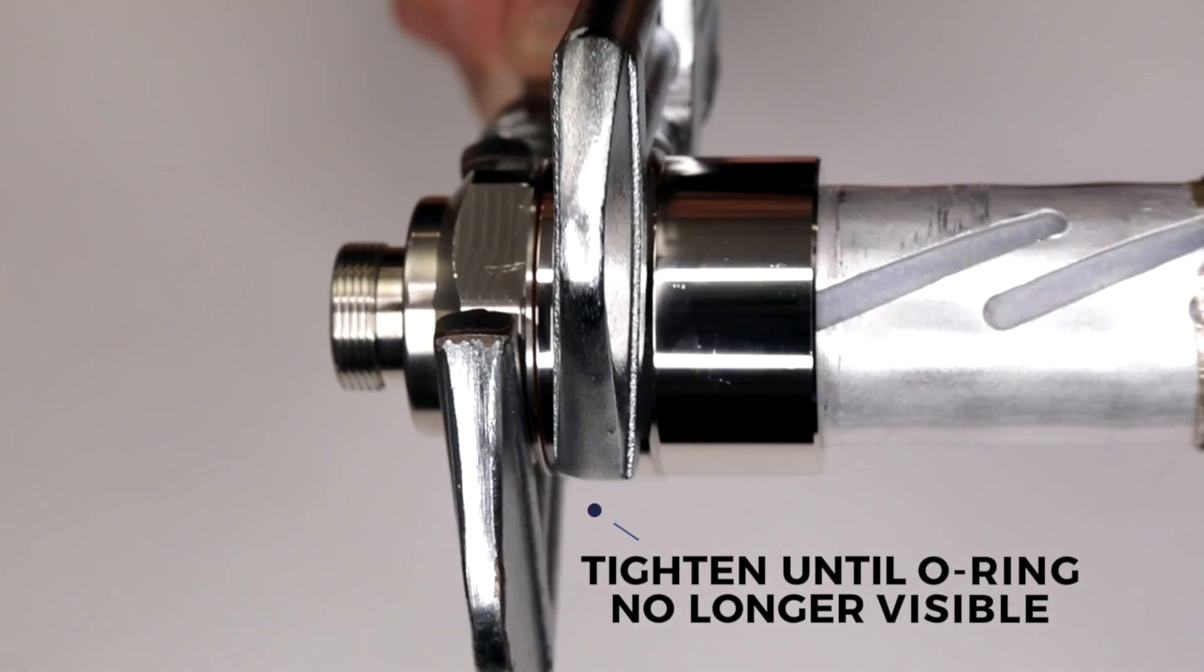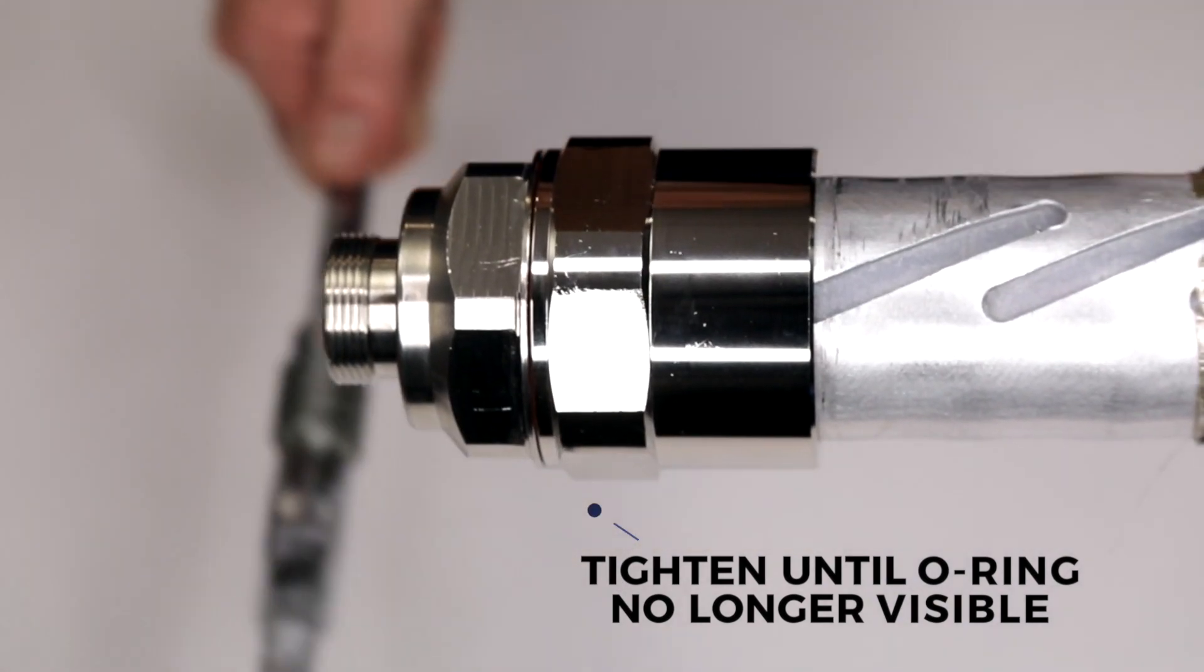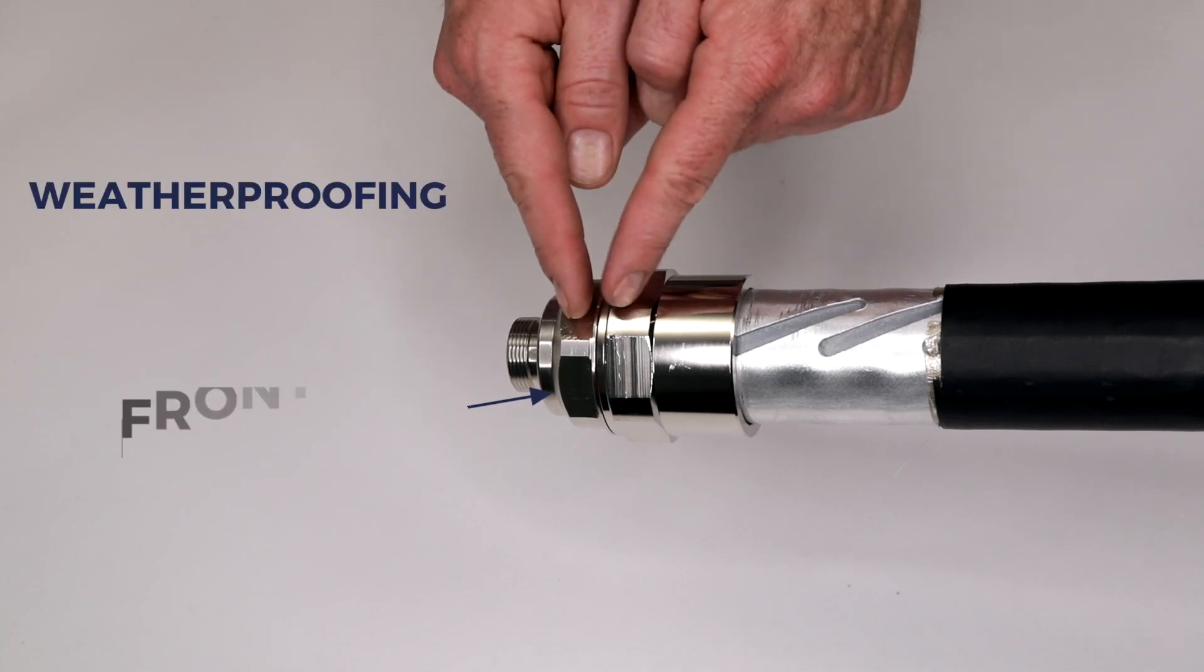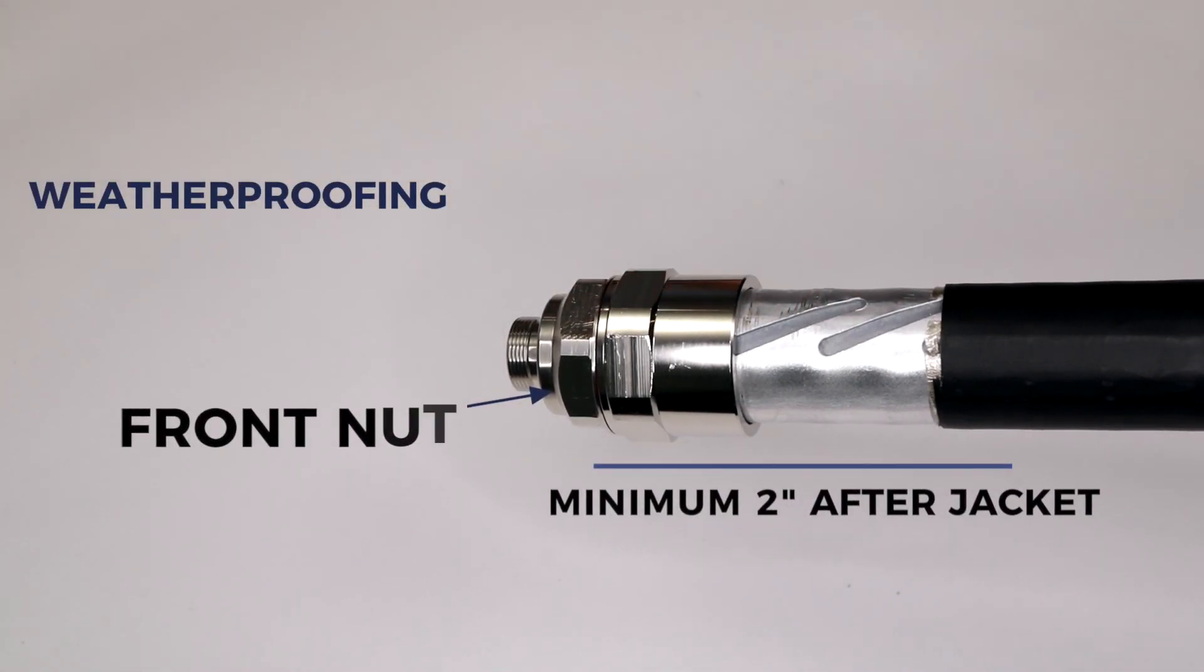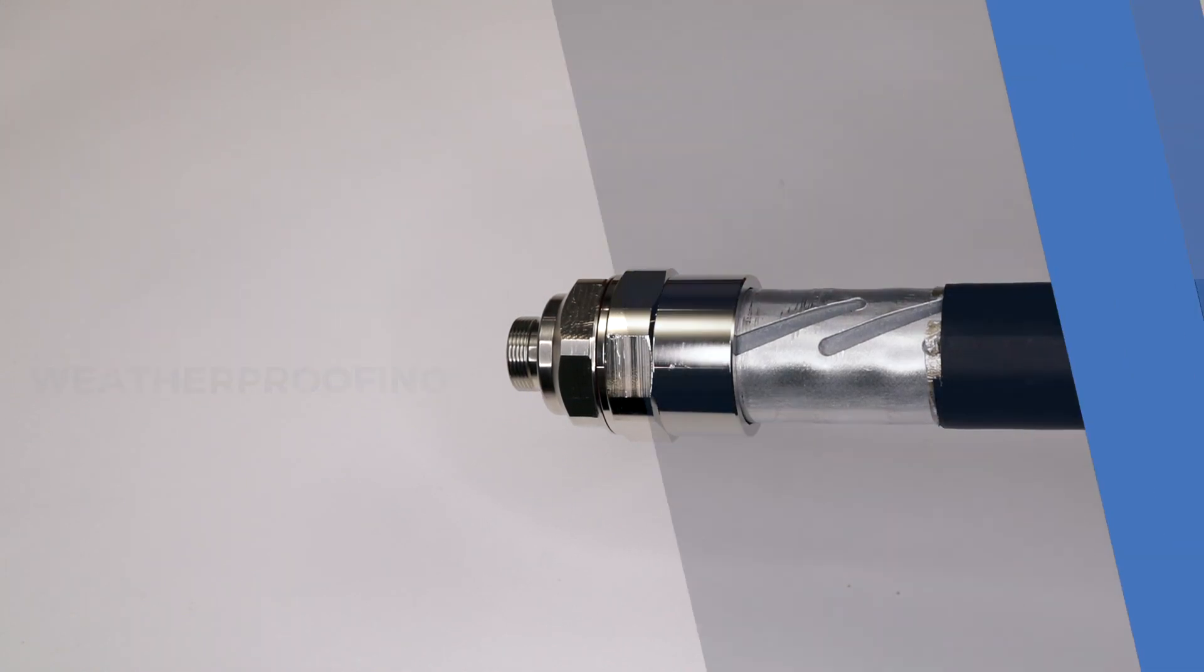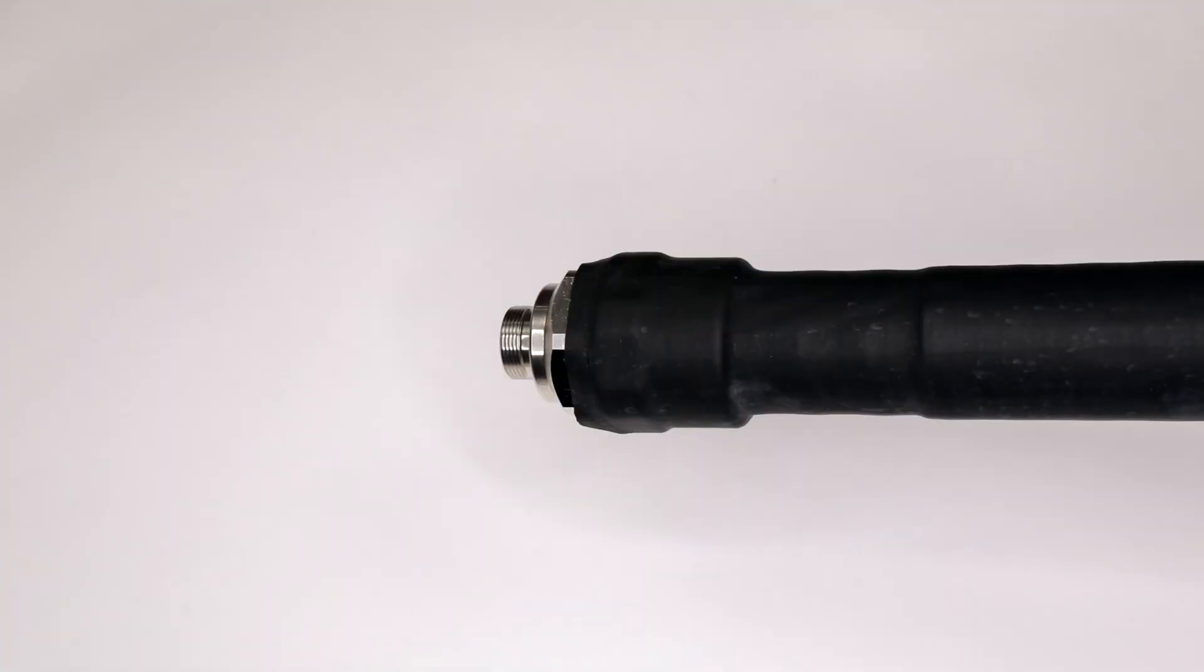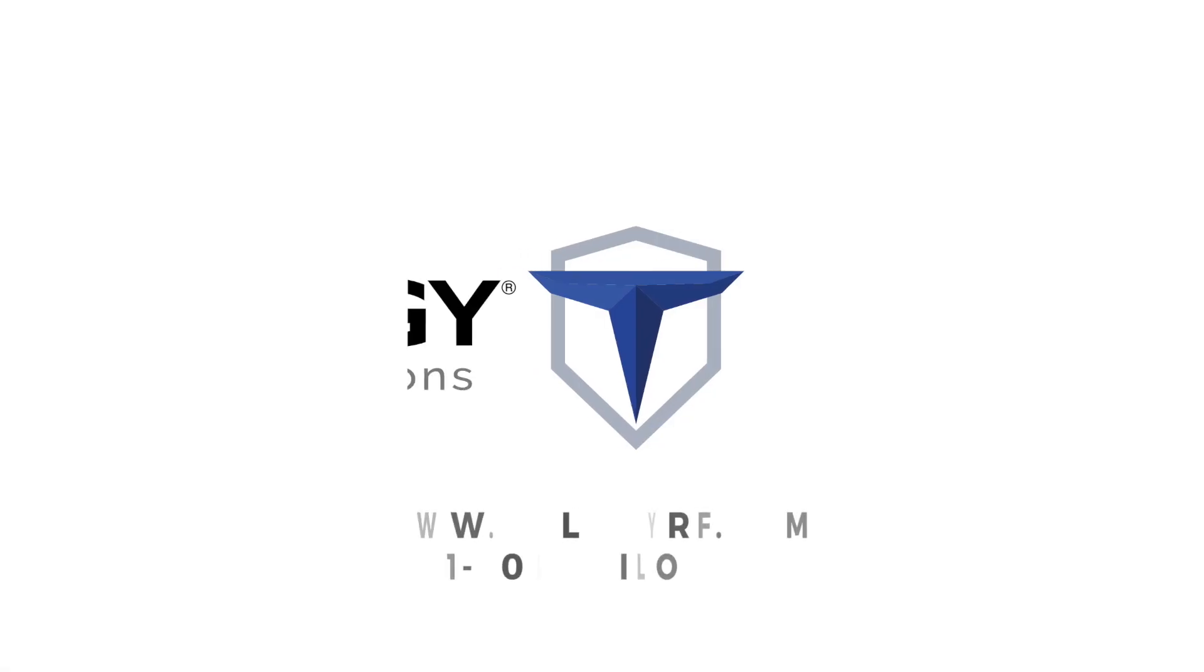When weatherproofing, ensure that the seal starts with the front nut of the connector and extends at least two inches past the jacket. The most reliable connector termination process in the connector is now complete.